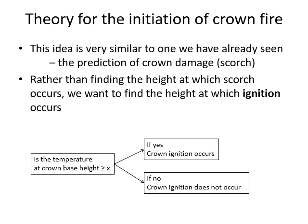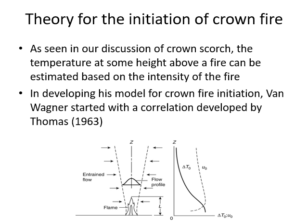This is actually similar to something we've already talked about: predicting crown damage or crown scorch. We were basically asking what height in the crown would reach 60°C — our cutoff for needle death. Rather than needle death, now we're concerned with the height at which ignition could occur. If our crown base height is lower than that, we would expect crown fire transition to be possible.